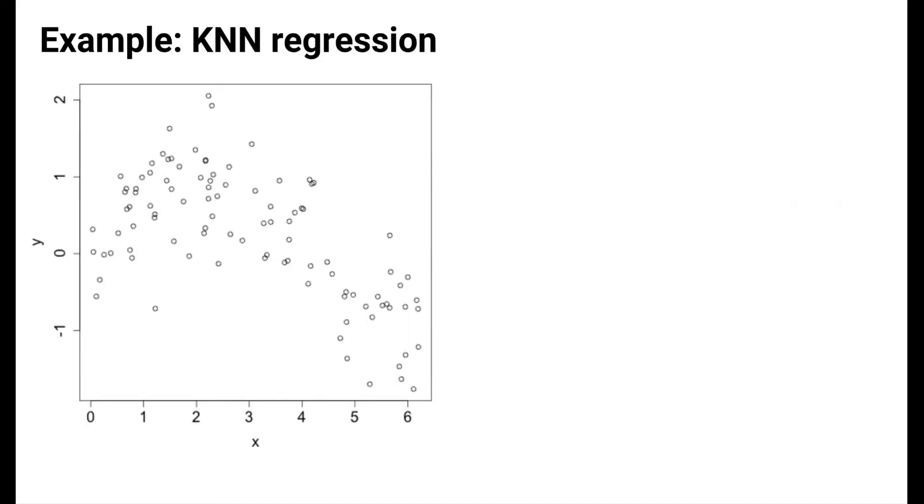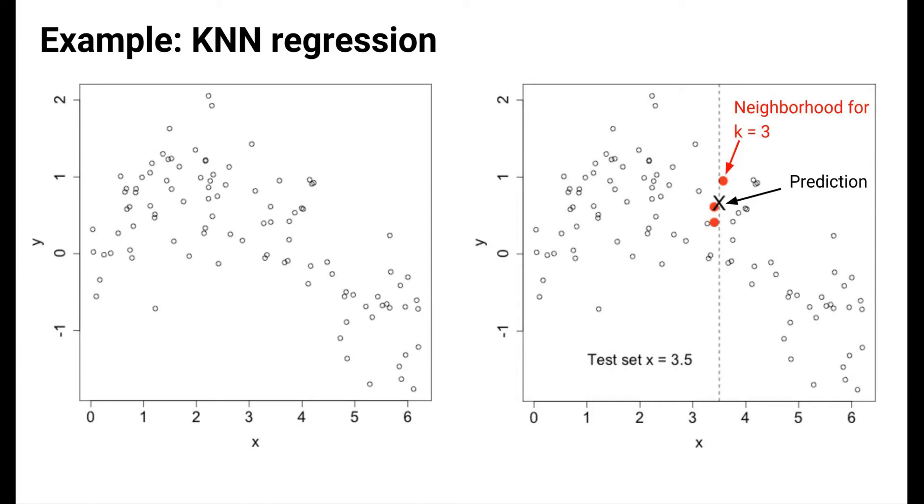For example, let's say that our training data consists of a predictor x and a response y plotted here on the left. Let's say that we have a case in the test set whose predictor value x is 3.5. The k-nearest neighbors algorithm for k equals 3 will find the three cases in the training data with the closest predictor values. These points are highlighted in red and form the neighborhood for this test case. The x on the plot indicates the average of the y values for those three points in the neighborhood. This is the prediction we would make for this test case.